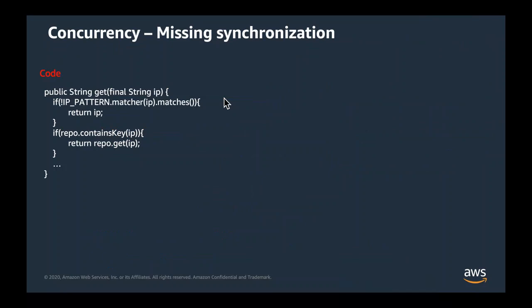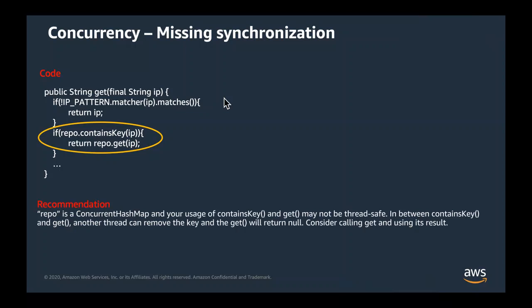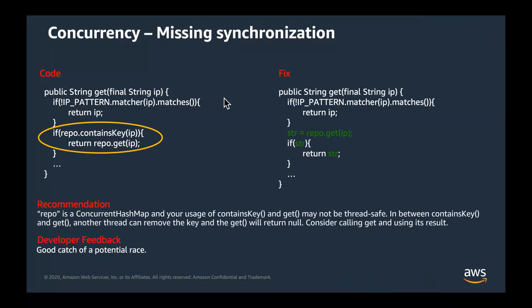Here's an example where a developer may be using a concurrent hash map. If in the second if statement I ask if it contains a key IP and, if so, I get that key, another thread may be modifying the map after I check the branch condition in a concurrent program. This could introduce a difficult bug that's hard to find because it only happens when another thread is operating at the exact right part of the program. These are exactly the kinds of things that are really hard to debug that CodeGuru Reviewer can help with today.